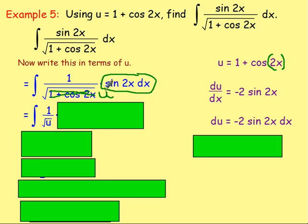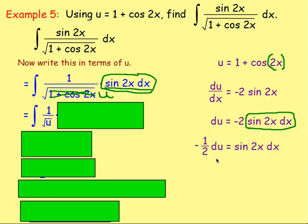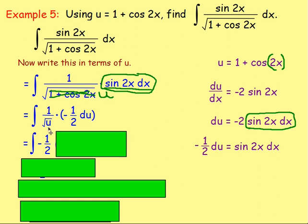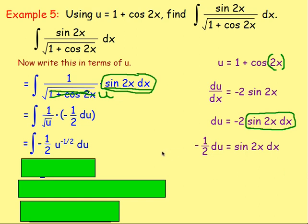We want to find out what sin 2x dx is equal to. We know that negative 2 sin 2x dx equals du. So to just get sin 2x dx on its own, we need to get rid of this negative 2 — divide both sides by negative 2 — and that gives us negative 1/2 du equals sin 2x dx. From there, we can replace sin 2x dx with negative 1/2 du. So we've got 1 over the square root of u times negative 1/2 du. Rewriting: negative 1/2, and moving the square root of u — which is u to the power of 1/2 — up to the top line as u to the power of negative 1/2, giving us the integral of negative 1/2 u to the power of negative 1/2 du.